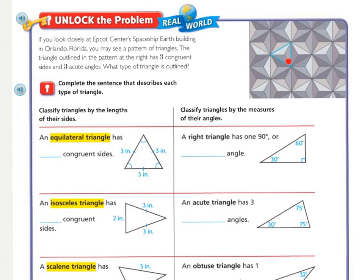So it's right here in blue. Congruent sides means they're all the same length, and three acute angles means they are less than 90 degrees. To squiggle underline what you're being asked to find — it's what type of triangle is outlined. The important information is that the three sides are congruent and the three angles are acute. We're going to fill out a table to help us determine what kind of triangle this is in the pattern.